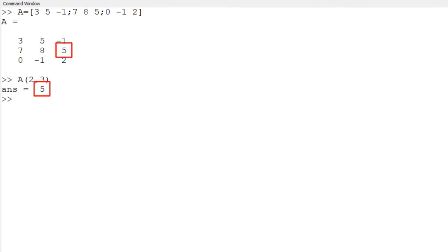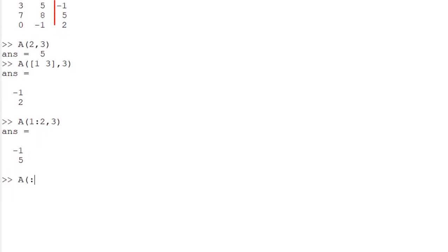You can also use brackets or colon operators for multiple indices. For example, you can use bracket 1 and 3 to access the first and third row to see minus 1 and 2. You can also use 1 colon 2 for the first two rows. You can use a colon only and it will select the entire rows. You can also use this approach for the column indices.